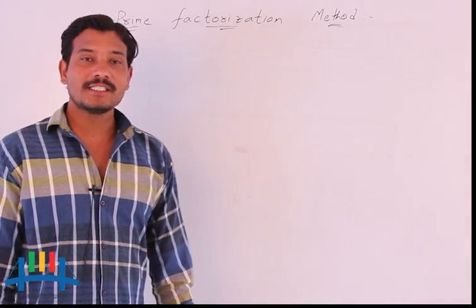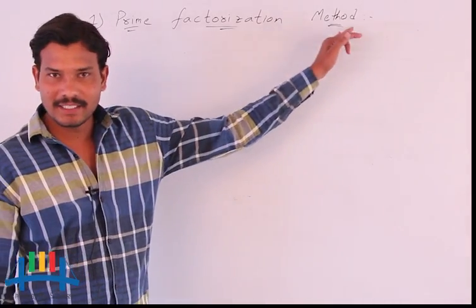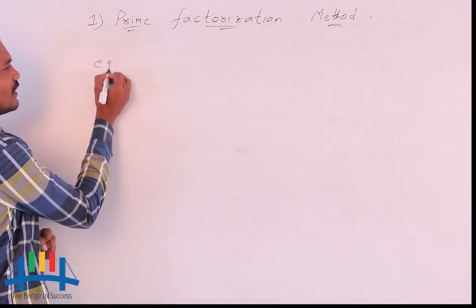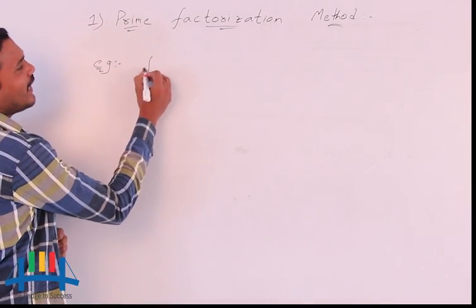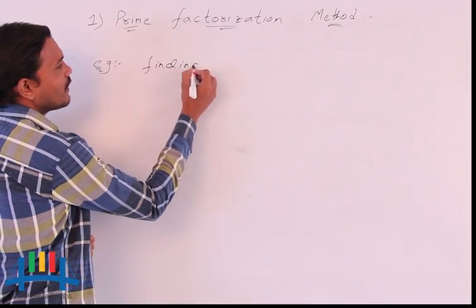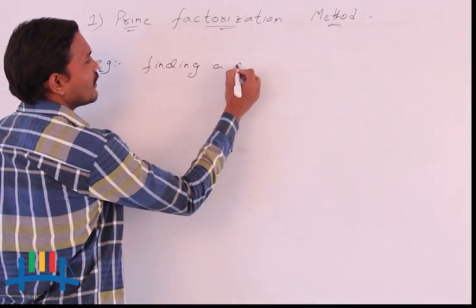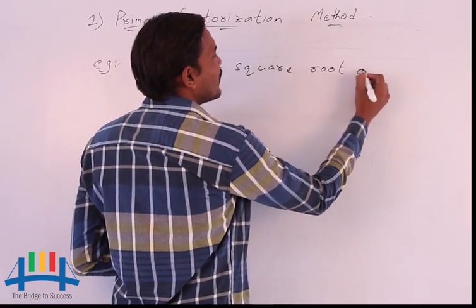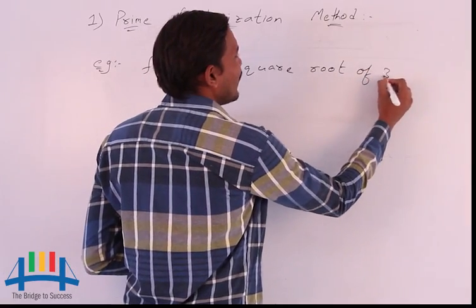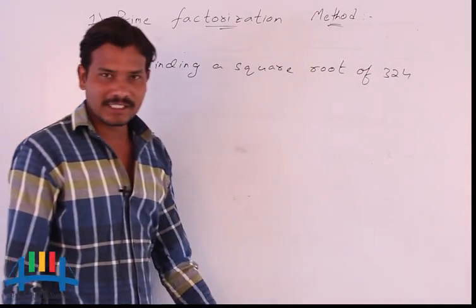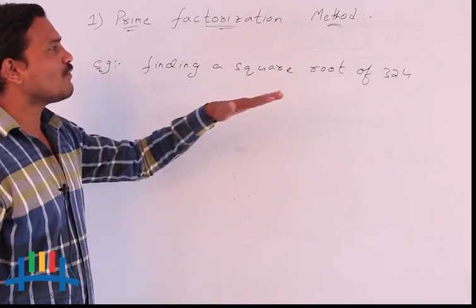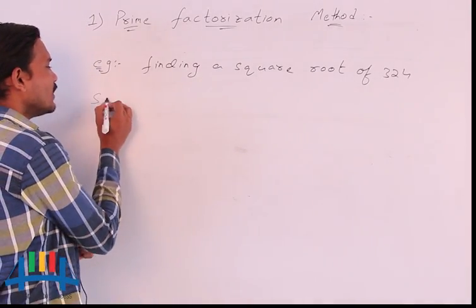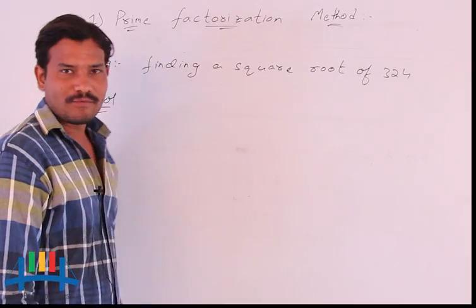Now we are going to discuss about the prime factorization method. For the first example, I will consider finding the square root of 324. I consider this three-digit number, that is 324. To find the square root of 324, first we should resolve the given number into prime factors.